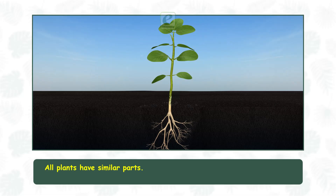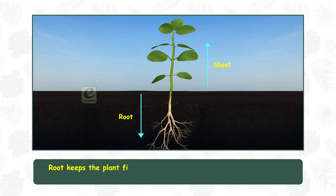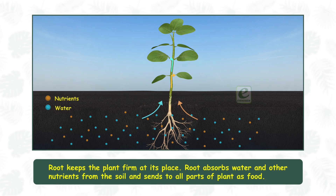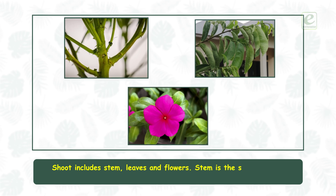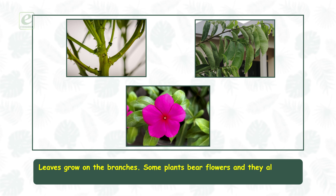Parts of a plant. All plants have similar parts. Any plant has two main divisions: root and shoot. Root remains in the soil and shoot remains above the soil. Root keeps the plant firm at its place. Root absorbs water and other nutrients from the soil and sends them to all parts of the plant as food. Shoot includes stem, leaves, and flowers. Stem is the strongest part of the plant. Many branches grow from the stem. Leaves grow on the branches. Some plants bear flowers and they also grow on the branches. Fruits grow from the flowers.